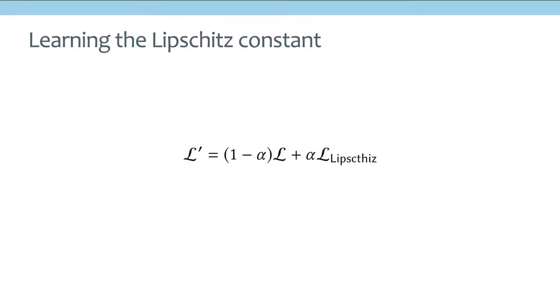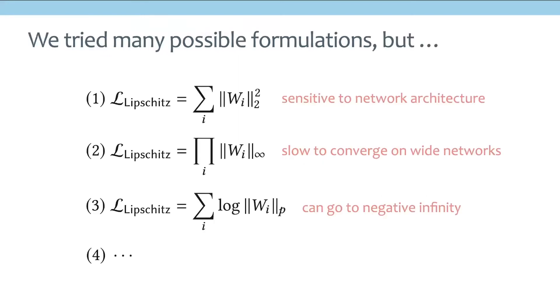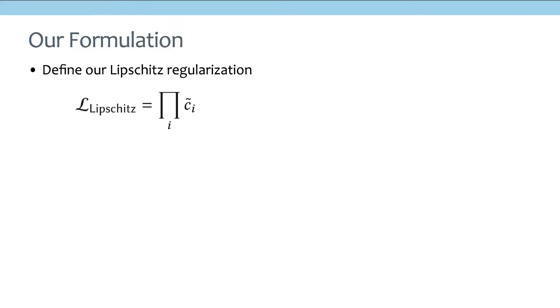So the fact that Lipschitz constant is so hard to tune motivates us to think about how we can automatically learn the Lipschitz constant with this Lipschitz multilayer perceptron. So basically, the key idea of our method is to define the new loss function as an original loss function plus a Lipschitz regularization. And I want to point out that this Lipschitz regularization basically tries to penalize the Lipschitz constant of the network and make the Lipschitz constant small.